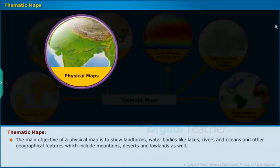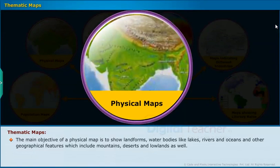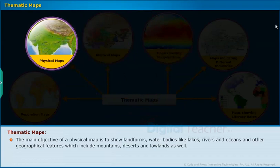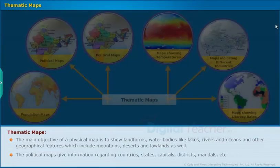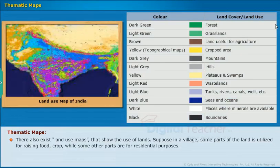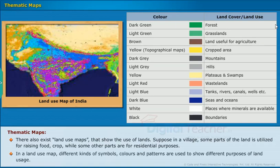The main objective of a physical map is to show landforms, water bodies like lakes, rivers and oceans, and other geographical features including mountains, deserts, and lowlands. Political maps give information regarding countries, states, capitals, districts, mandals, etc. Land use maps show the use of lands — for example, in a village, some parts may be used for raising food crops while others are for residential purposes. Different symbols, colors, and patterns are used to show different purposes of land usage.